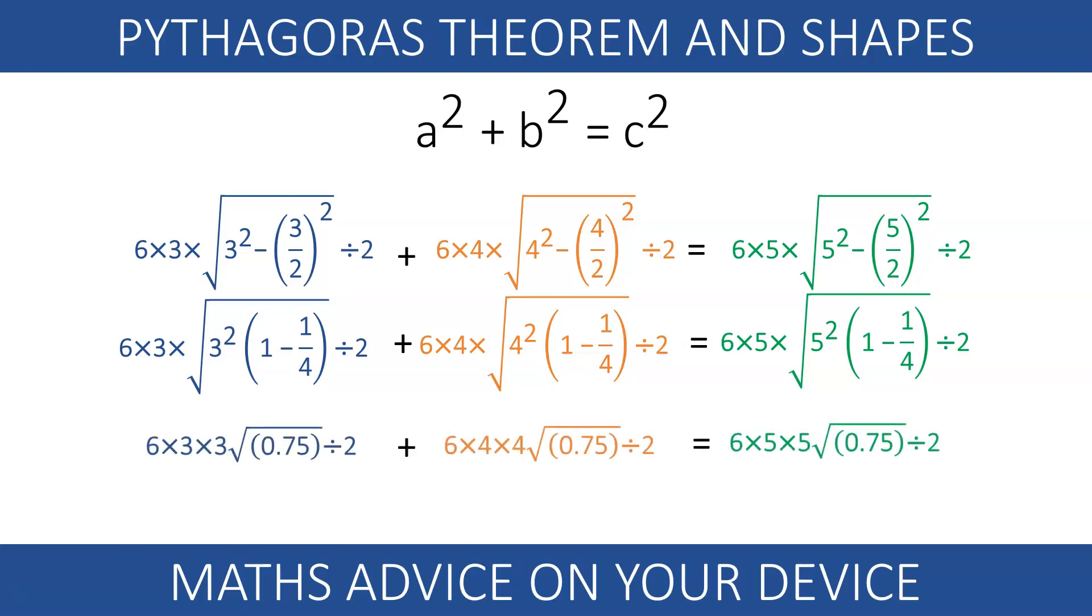Canceling the common terms out—6 and square root of 0.75 divided by 2—we end up with 3 squared plus 4 squared equals 5 squared. Voila! Pythagoras theorem!